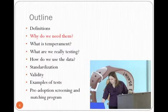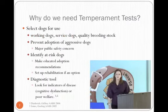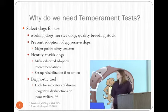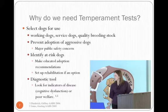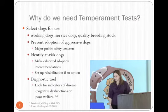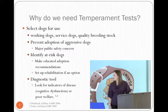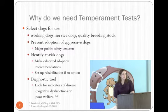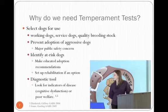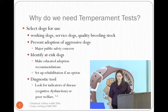So why do we need these tests? They've been used historically for different purposes. We've used these to select dogs for different uses, such as working dogs, service dogs, and identifying appropriate breeding animals. We've used them in shelter medicine mainly to prevent adoption of aggressive dogs, which is a major public safety concern. We're also using them to try to identify at-risk dogs — those who may have potential behavior issues that will occur in the home other than aggression.